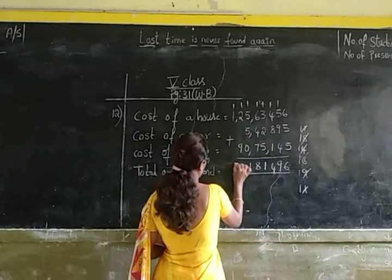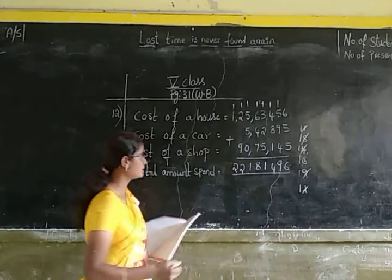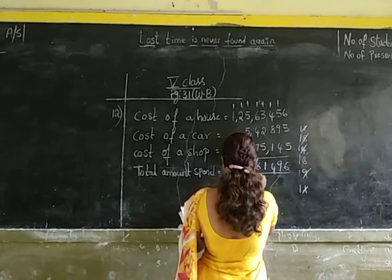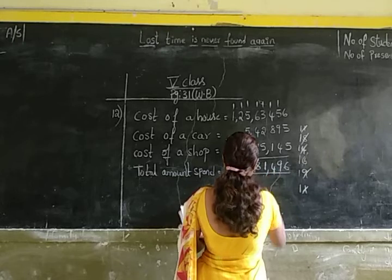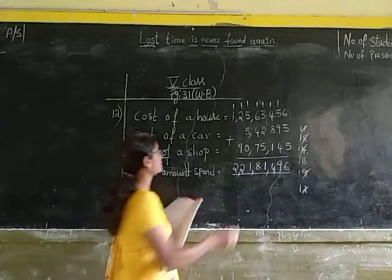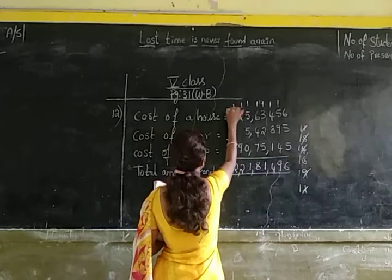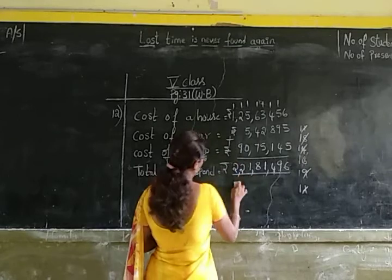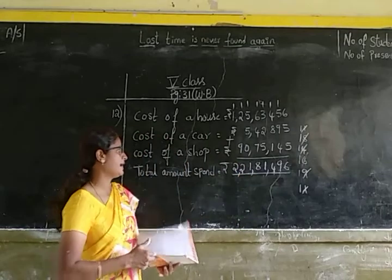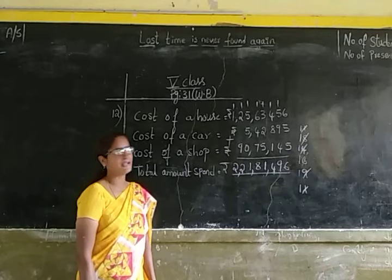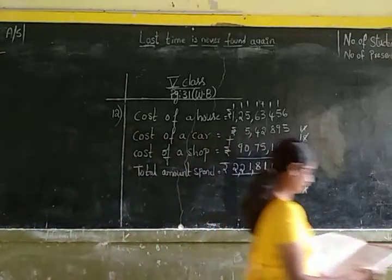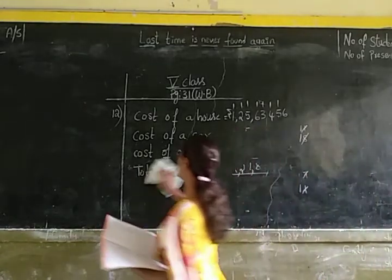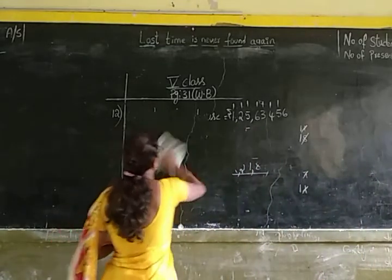So 1 plus 1 is 2. What is the total amount spent? Total amount spent is 2 crores 21 lakhs 81,496. Here you have to put the symbol of rupees. So you spent rupees 2 crores 21 lakhs 81,496. Okay children, now let us do the 13th sum.